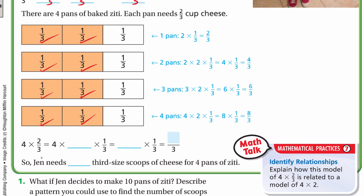So 4 × 2/3 — instead of 2/3, we can write it as 2 × 1/3. So 2 × 1/3 is the same as 2/3. Now we have 4 × 2 × 1/3, three numbers multiplied. Because multiplication is commutative, we can multiply the 4 by 2 first. 4 × 2 = 8, so 8 × 1/3 = 8/3. Jen needs eight one-third–sized scoops of cheese for four pans of ziti.